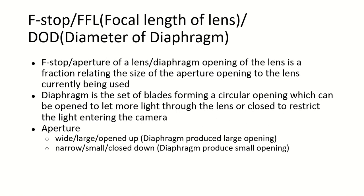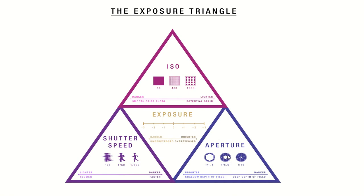The F-stop: FFL, that is focal length of lens, divided by DOD, diameter of diaphragm. It is related to the size of the aperture opening to the lens. Diaphragm are the blades forming a circular opening to allow light to enter the camera. These blades form the diaphragm, and the F-stop is the diameter of diaphragm.